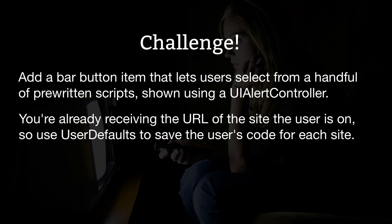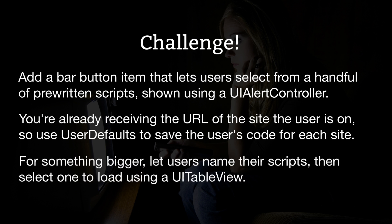Second, you're already receiving the URL of the site the user's on, so use UserDefaults to save the user's JavaScript for each site. You should convert the URL to a URL object in order to use its host property. And third, for something bigger, let users name their scripts, then select one to load using a UITableView.